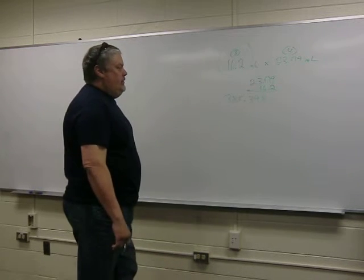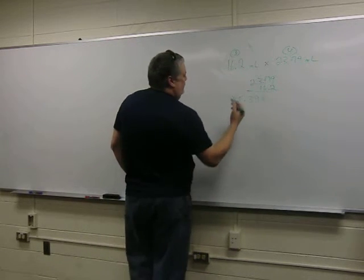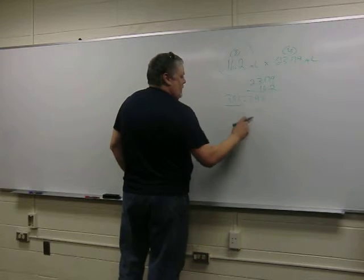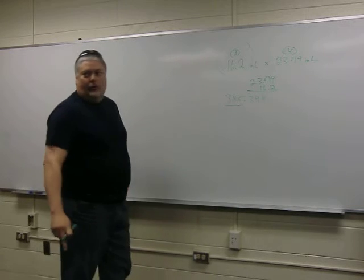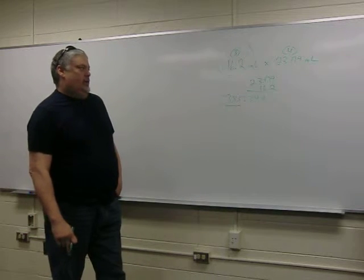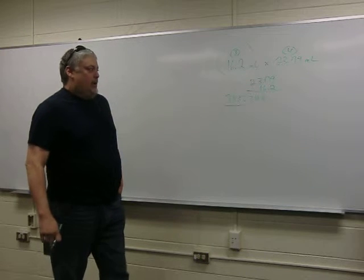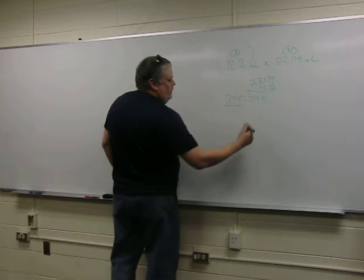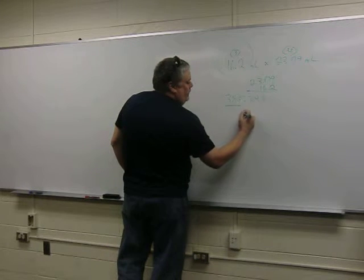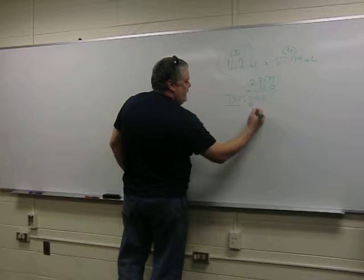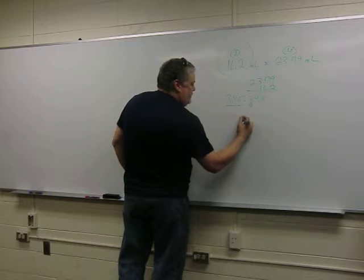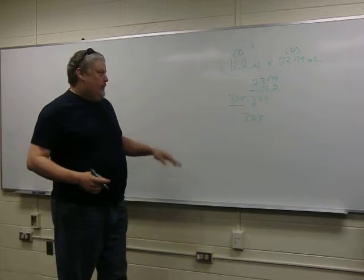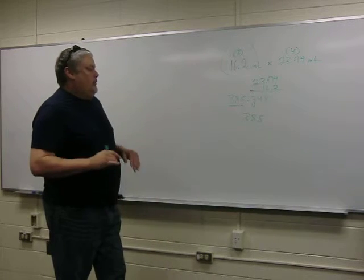Now, let's put that in three significant figures. Always starting from the left. One, two, three. Okay. So we know that this fourth number's got to go away. So is it going to become a zero and stay at 385, or is it going to round up and become 386? It's zero through four, so it rounds down, which means this stays the same. So your final answer in the correct number of significant figures for that problem is 385.